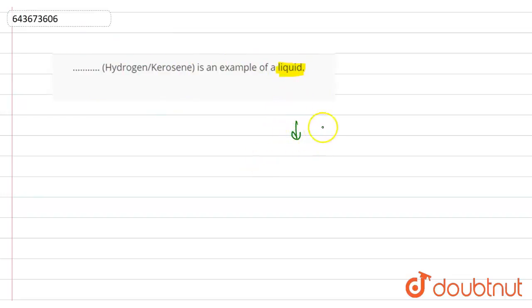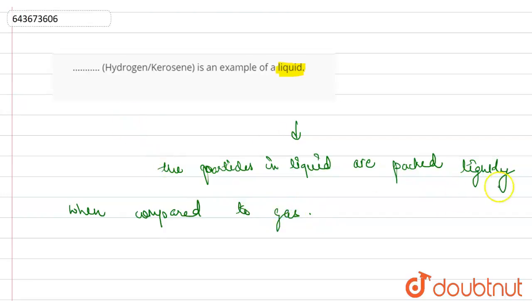In liquid, we know it is a state of matter and also that the molecules or the particles in liquid are packed a bit tightly, or let us say they are packed tightly when compared to gas. And hence also that in liquids,